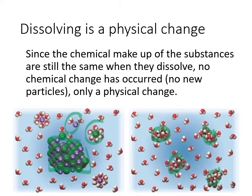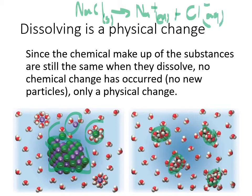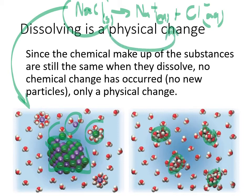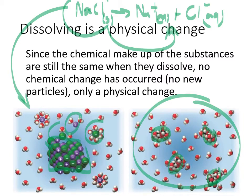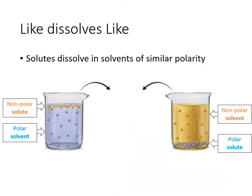With an ionic crystal it might look like you're getting a new substance because it looks quite different, but remember the ions already had charges. When we write the dissociation equation for sodium chloride — a solid becoming aqueous ions — all we're doing is saying they are surrounded by water, the same thing that happens with molecules. Neither the dissolving of ionics nor the dissolving of molecules is a chemical reaction; both are physical changes.